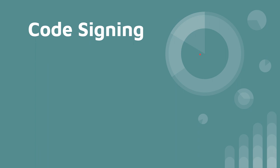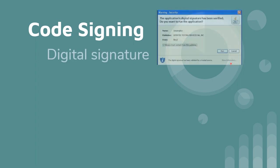Code signing is the first term. Code signing basically refers to the digital signature on software when you are trying to install something. Many of you have probably seen something like this pop up when you try to install something for the first time. The operating system will check the digital signature of the software, and sometimes this will say it's unknown.